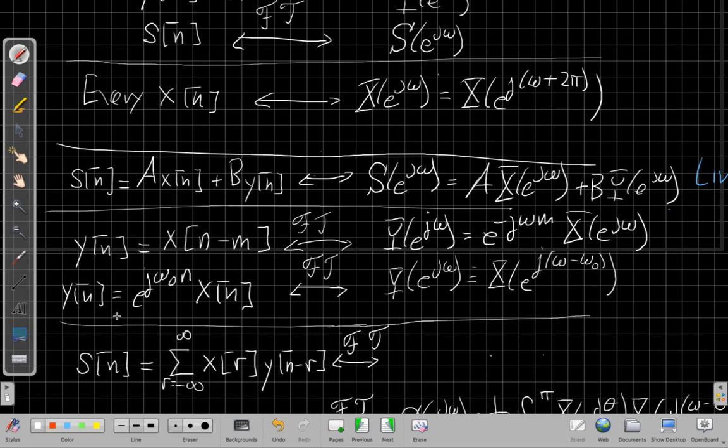In the Fourier series, we saw a shift in time said take the Fourier series and multiply it by a complex exponential. The same thing is going on here. We take the Fourier transform, multiply by a complex exponential, and we shift in time.